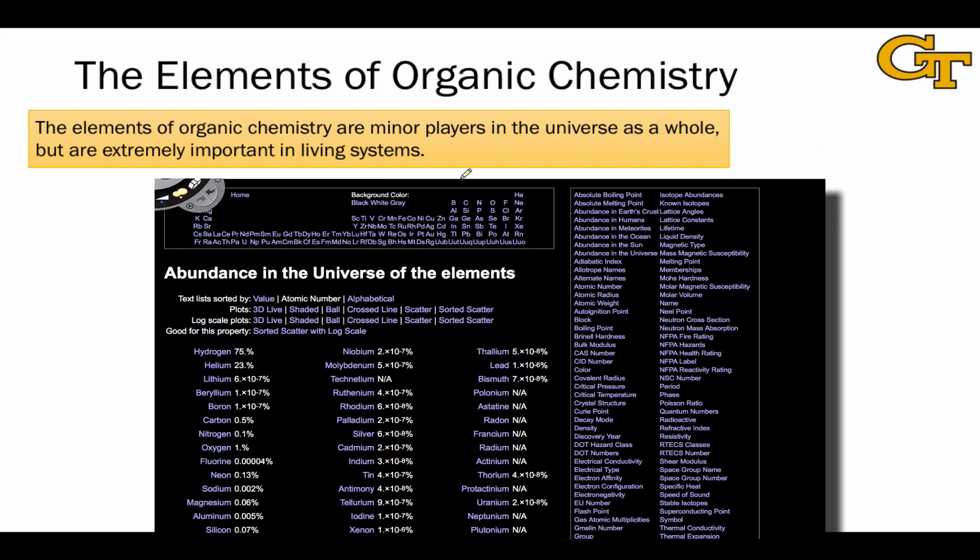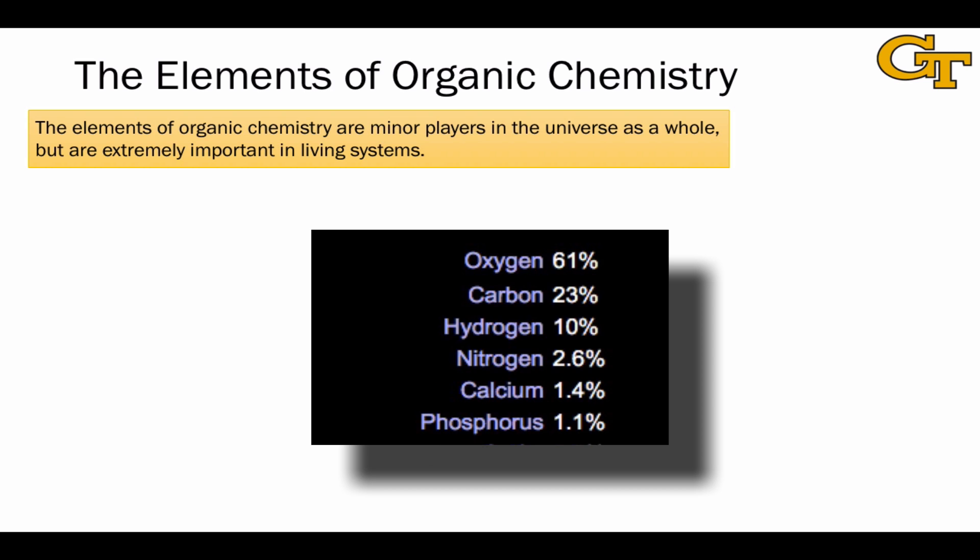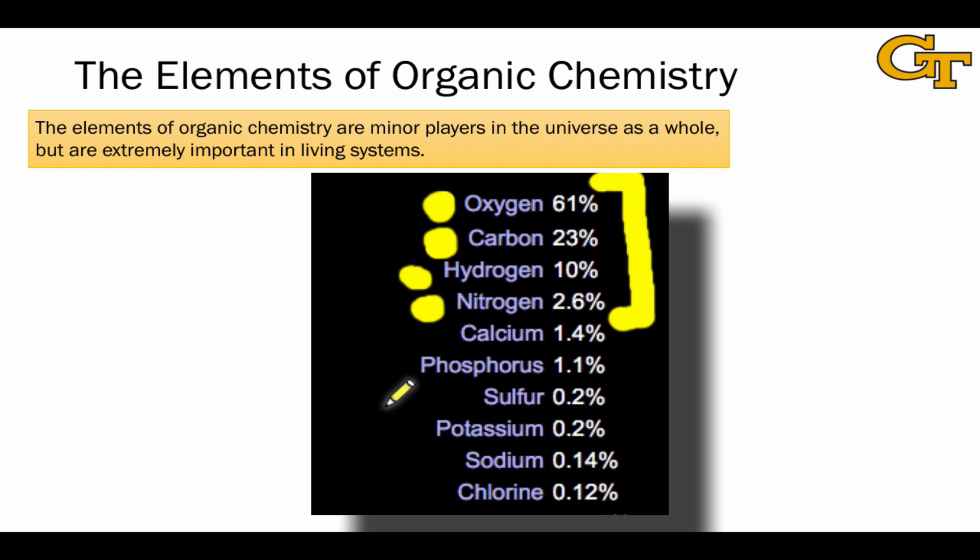On the other hand, if we look at the abundance of the elements in the human body, we see a totally different situation. With the top four elements here—oxygen, carbon, hydrogen, and nitrogen—serving as the key players in organic chemistry, it's really these four that are the foundational elements of organic chemistry. We also see some of our other important players, such as phosphorus, sulfur, and chlorine showing up very high in this list as well.